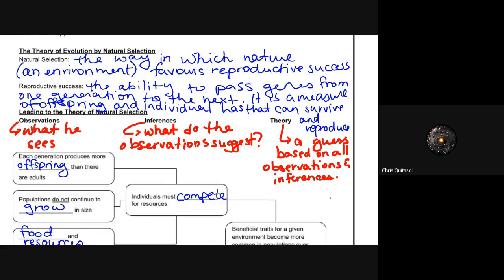We talked a lot about traits with regards to genetics last unit. We're going to talk a lot about successful traits in this unit. Reproductive success is described as the ability to pass on genes from one generation to the next, and it's a measure of an offspring and the individual that has the ability to survive and reproduce. Species or individuals that successfully reproduce are said to have traits that nature selects for.